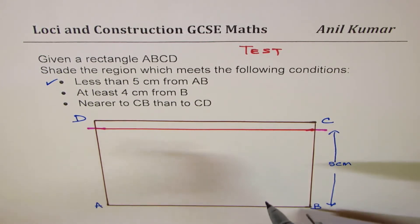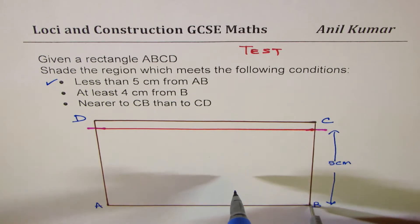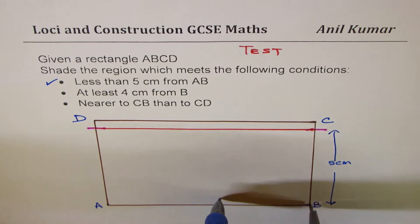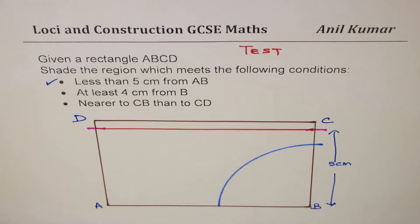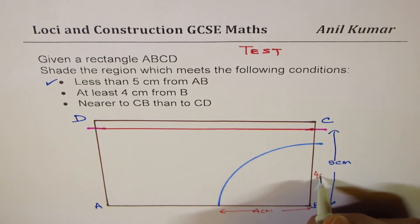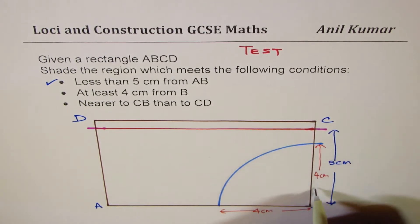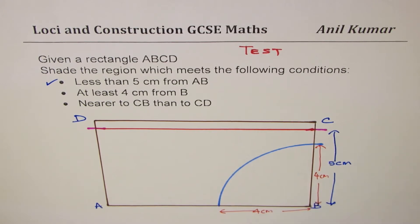So when we are saying 4 cm, we'll place it at B. From B, it is at least 4 cm. So it has to be more than that. So we'll make an arc. Now this arc is 4 cm from B. So this unit is from here, we have 4 cm. So this is 4 cm. When we say away, that means it is away. That is away.